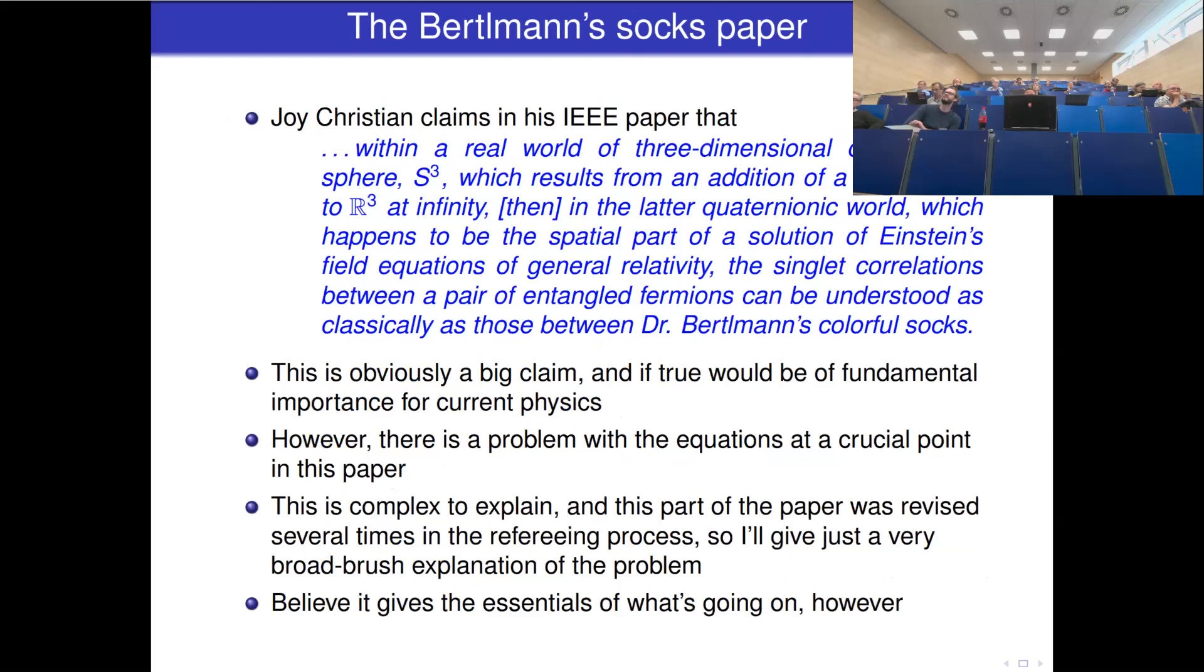So Bell said you might assume that quantum entanglement is just the same as this business of okay, one sock's pink, therefore the other one isn't. However, this is a non-admissible simplification, and Bell in his article explains why. Now, Joy Christian claims in his IEEE paper that within a real world of three-dimensional quaternionic sphere S3, resulting from the addition of a single point at infinity, which happens to be the spatial part of the solution of Einstein's field equations of general relativity, the singlet correlations between a pair of entangled fermions can be understood as classically as those between Dr. Bertlemann's colorful socks. This is a very big claim. If true, this would be of fundamental importance to current physics. But I believe there's a problem with the equations at a crucial point in this paper.